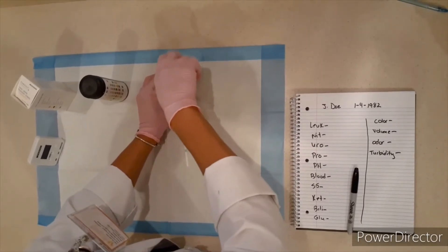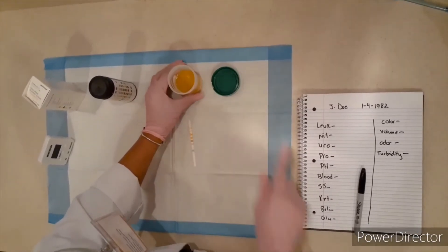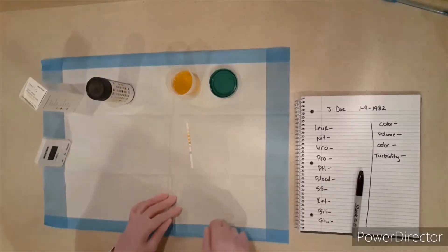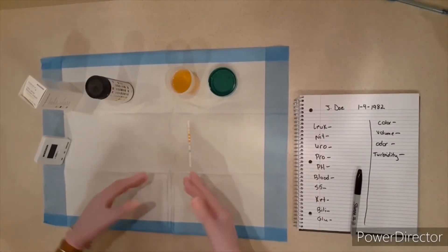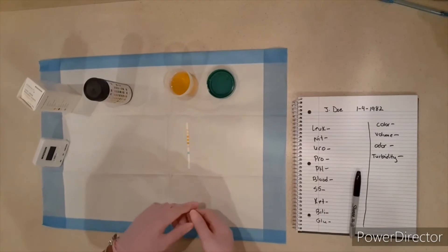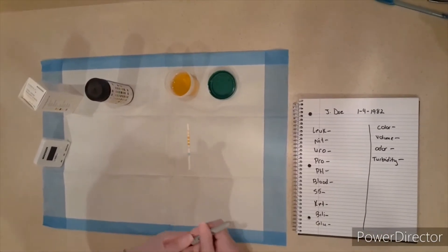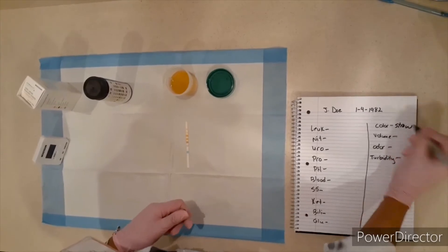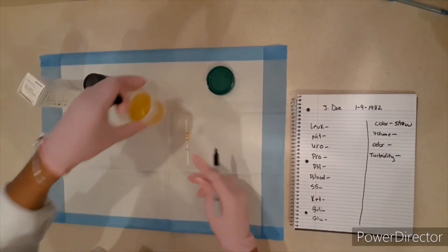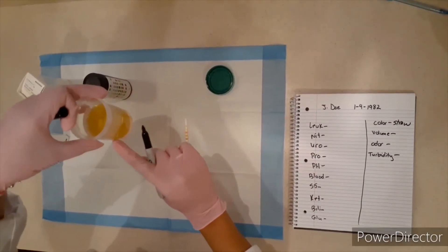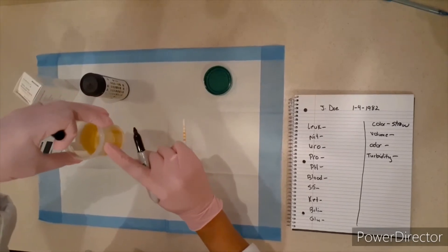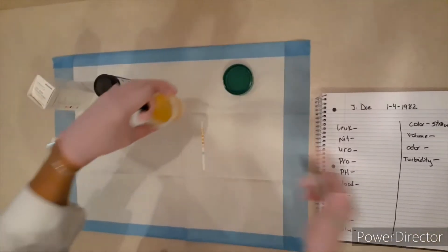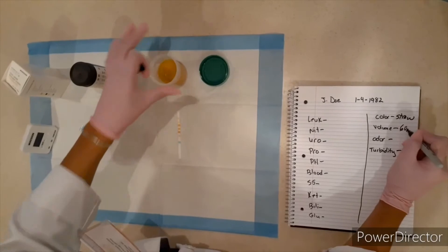So we also not only have to write down the readings that we get from the urine from our reagent strip, but we also want to document the color of the urine. We like a nice straw color. So this one is a good color straw. The volume of the urine we have about 60 ml, which is written on the bottle. It's a little hard to see with the urine, but the ml are marked on here. So we have about 60 ml.